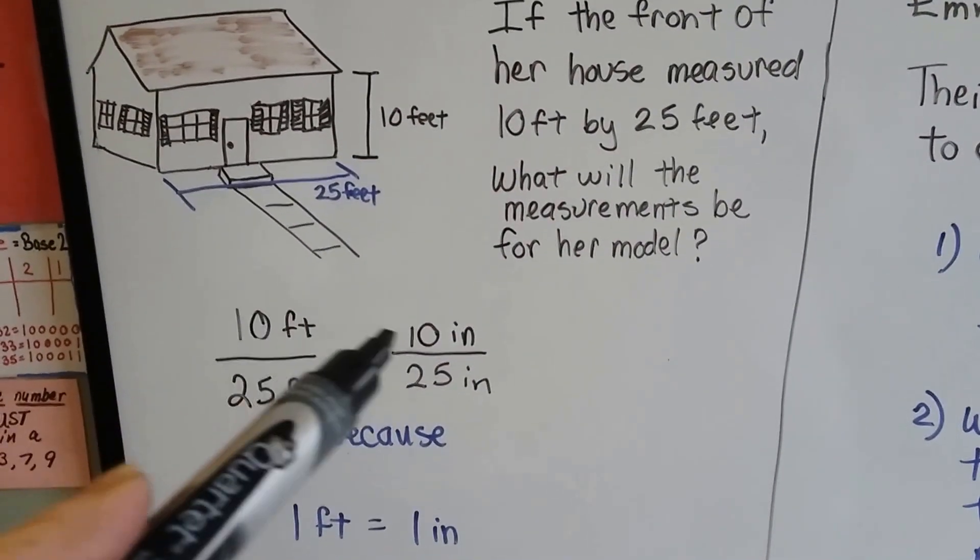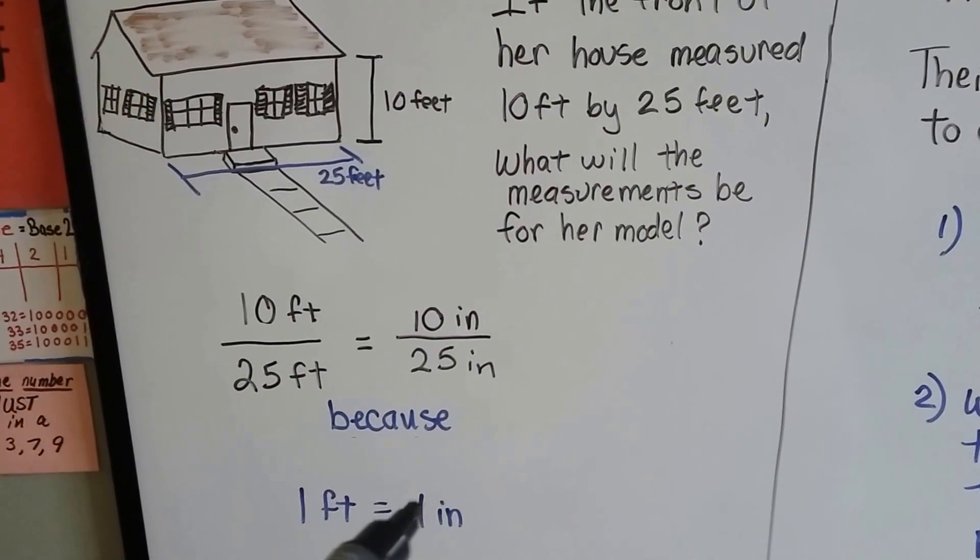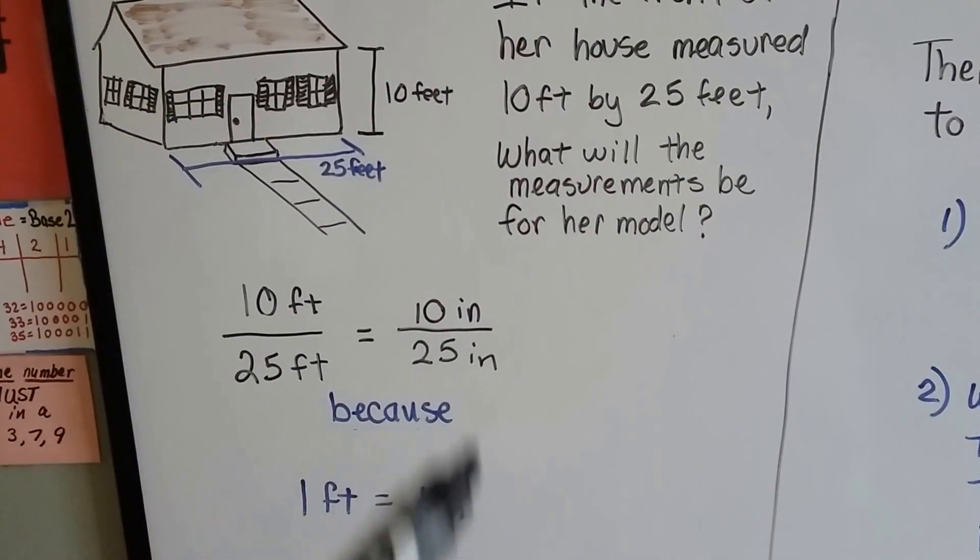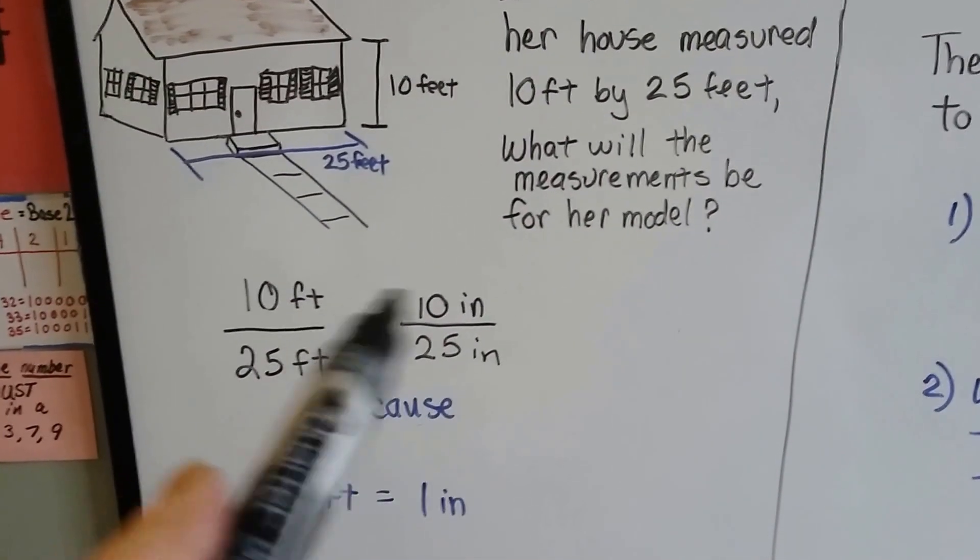Well, 10 feet would be 10 inches because one foot equals one inch, and 25 feet would be 25 inches, see? And they're in proportion to each other. That was an easy one.